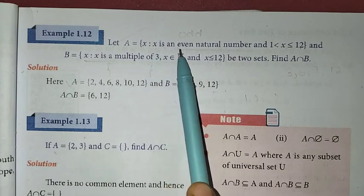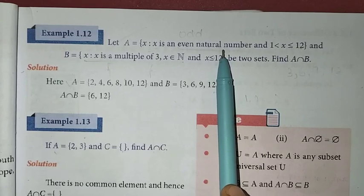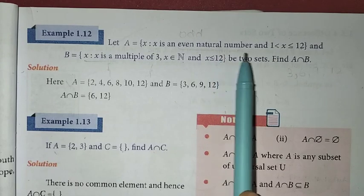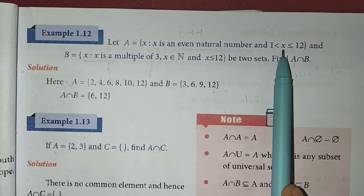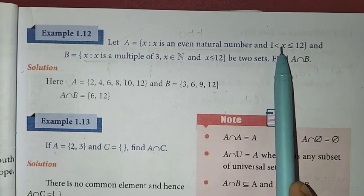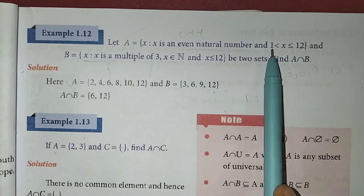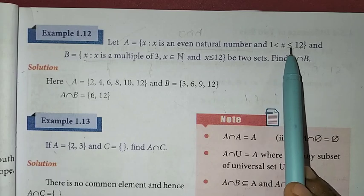First, x is an even natural number. Even natural numbers are 2, 4, 6, 8, 10, 12, 14, etc. Now for the condition 1 < x ≤ 12, the open inequality at 1 means we don't include 1, but the closed inequality at 12 with the equal sign means we include 12.